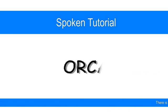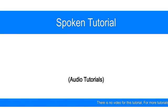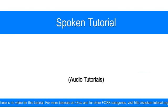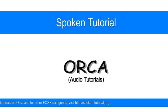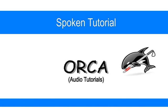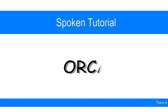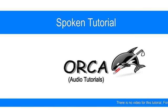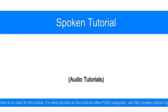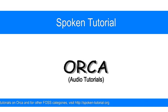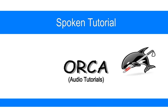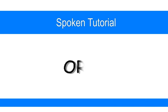We already know that pressing the letter H moves to the next heading, and Shift plus H moves to the previous heading. But as we just heard, Orca told us about two sets of new commands: pressing 1, 2, or 3 moves us to the next heading at level 1, 2, or 3 respectively. Similarly, Shift plus 1, 2, and 3 moves us in the reverse direction for the respective heading level. In most cases, the main title is at heading level 1, sections at level 2, and subsections at level 3.